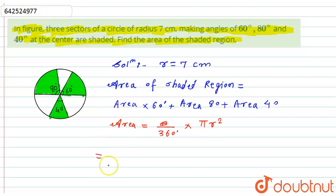So here the area of the first region will be nothing but 60 divided by 360 into pi, r is nothing but 7 squared, plus area for the second region with central angle 80 will be 80 divided by 360 into pi r squared, plus area of the third region will be 40 divided by 360 into pi 7 squared.